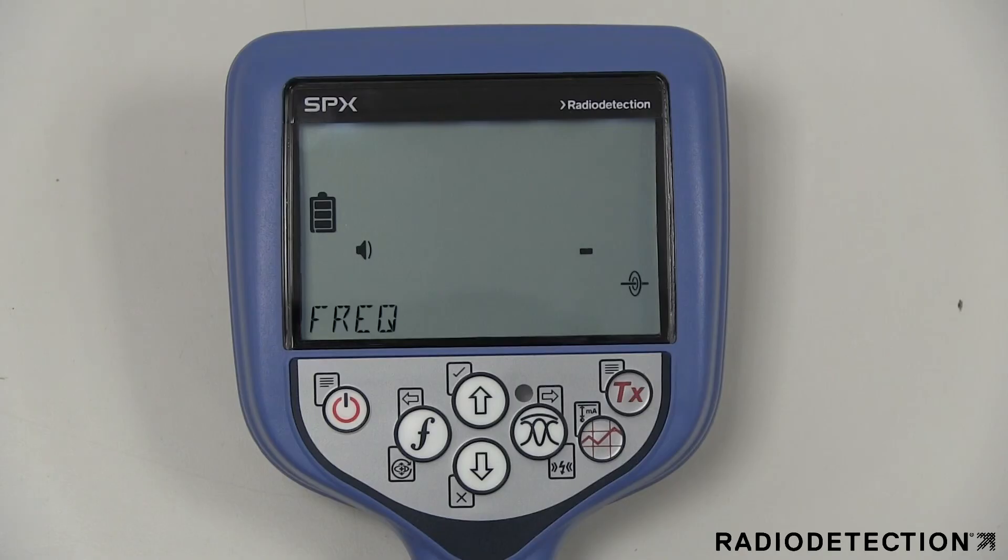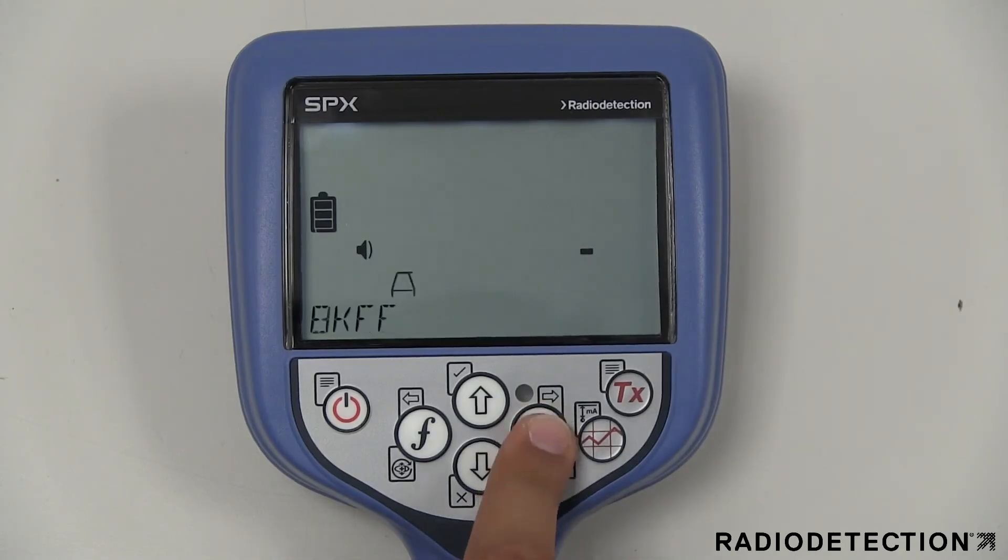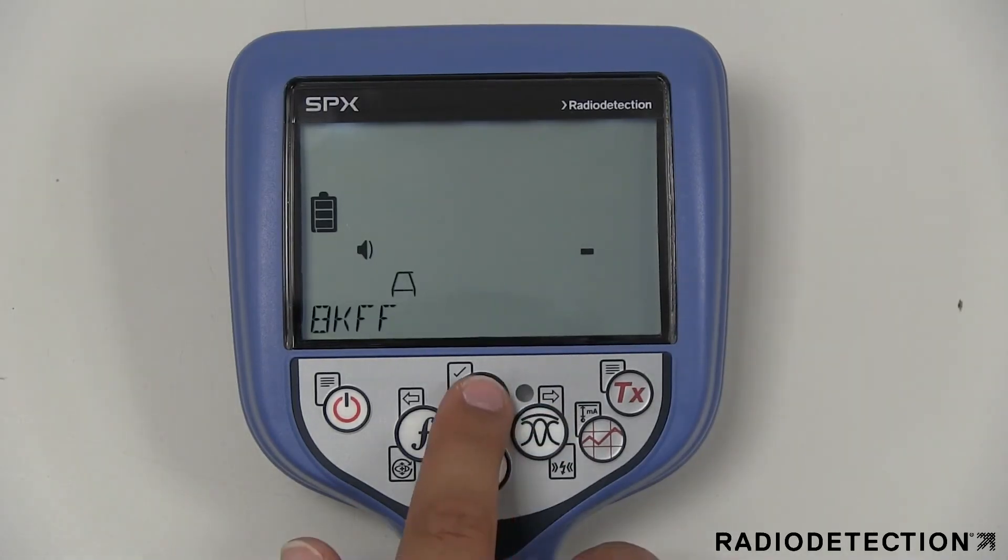The frequency menu gives you the option of enabling or disabling individual frequencies on the locator.